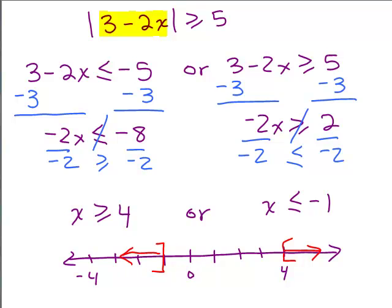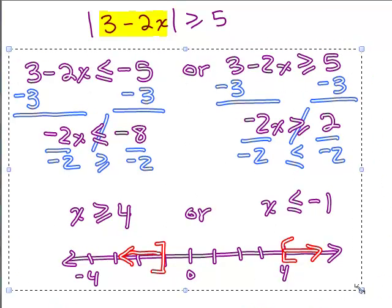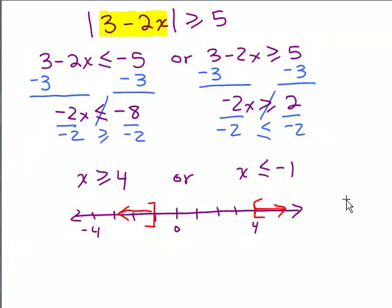So this is the graph of it and how would we write this in interval notation? I'm going to make this a little bit smaller so I can get this all on the same screen. So how do we write the answer using interval notation? It goes from negative infinity to negative 1, union 4 to infinity.